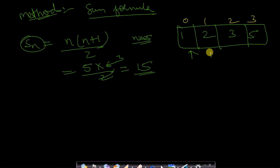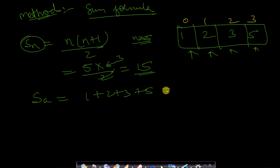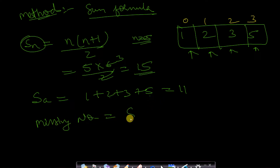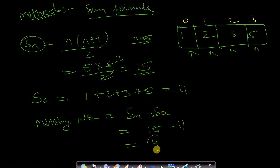We loop through all array elements to find the array sum: 1+2+3+5 = 11. To find the missing number, we compute SN minus SA — the sum of natural numbers minus the sum of the array — which is 15 minus 11 = 4. That is our answer.